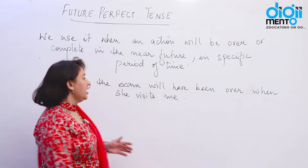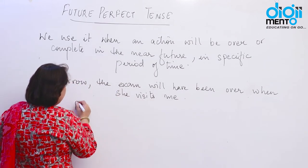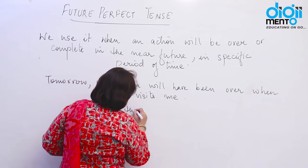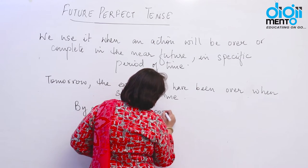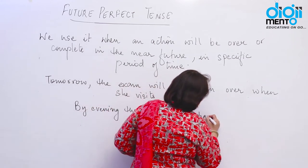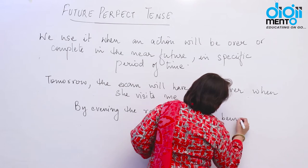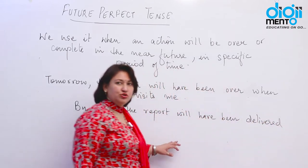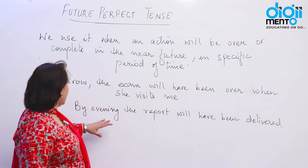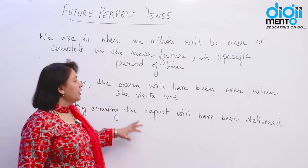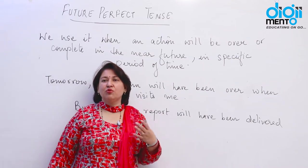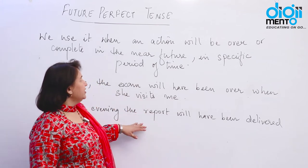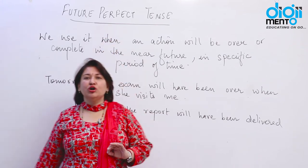Or if I say 'By evening, the report will have been delivered.' So here we talk about a specific period of time when the work will be finished — the work will be completed. In that case, we always use future perfect tense.